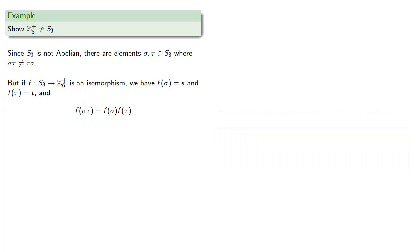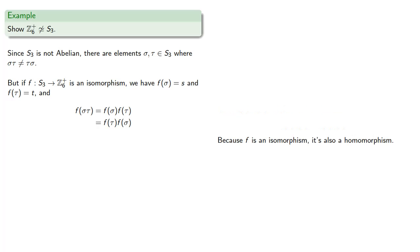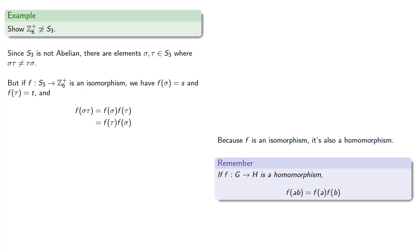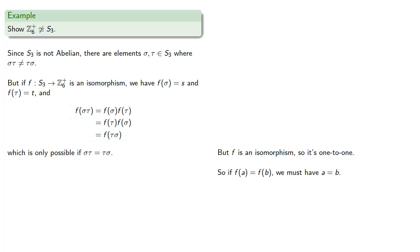Since our function values live in Z6, which is abelian, we can rearrange the order, so F of tau times F of sigma equals F of sigma times F of tau. Because F is also a homomorphism, that equality works in both directions — if I have a product of function values, I can combine them into the function value of the product. But F is an isomorphism, so it's one-to-one: if F of A equals F of B, we must have A equal to B. So here we get F of sigma tau equals F of tau sigma, and therefore sigma tau must equal tau sigma, which is a contradiction.